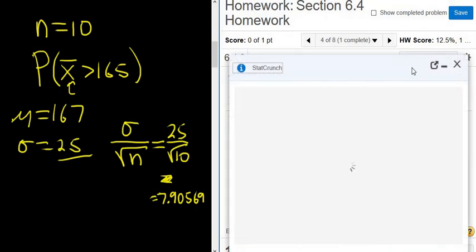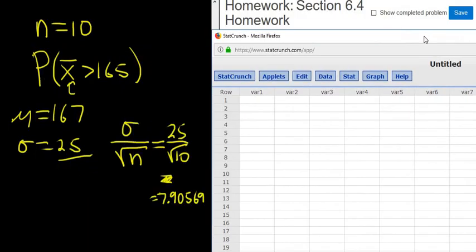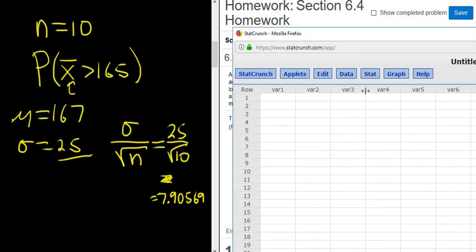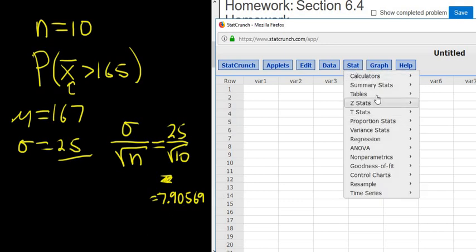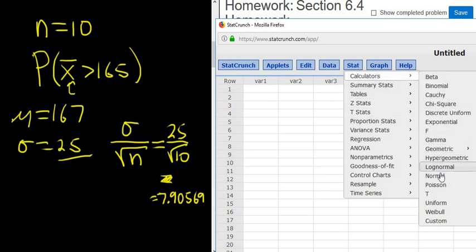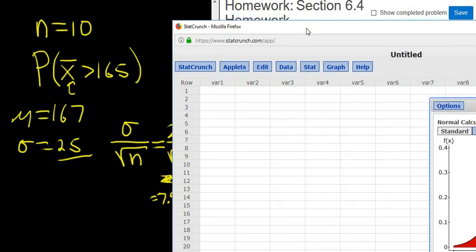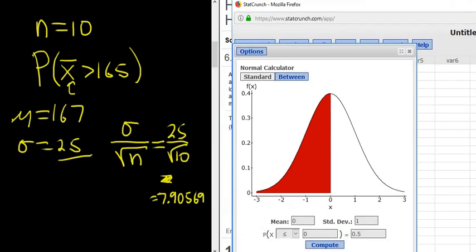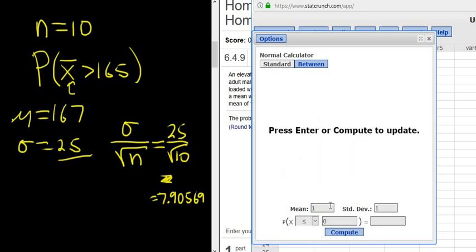So StatCrunch. It's always better to use more. The homework is usually pretty good about accepting a variety of answers, but every once in a while, a problem will creep up where you want to use more than two decimals. Stat, calculators, and then normal. Okay, let me slide it over here. There it is. Stat, calc, normal. All right. The mean here was, there it is, 167. That's our mean. The standard deviation, it's this new one here. That's the whole point. 7.90569.